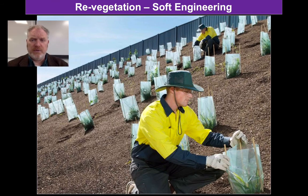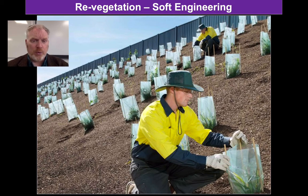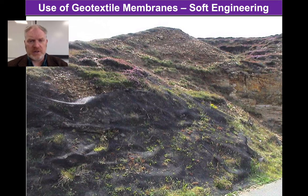We can use soft engineering such as revegetating slopes, particularly where we have unconsolidated material like soils. By planting there, the roots will bind the slope together and prevent mass movement. However, on the link road that goes down to Cardiff Bay, there are slopes that were dug back to a more stable angle and attempts were made to revegetate them — but they haven't worked, and you can see gullies being eroded because we don't have the roots to bind that material together. Part of this approach might involve geotextiles — material spread over the surface of a slope to help hold the ground together and allow plants to take root.